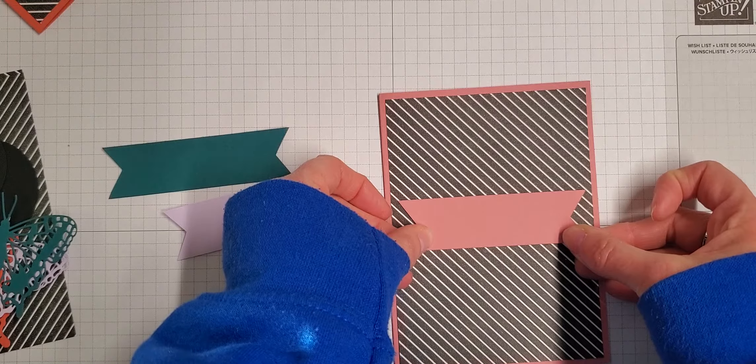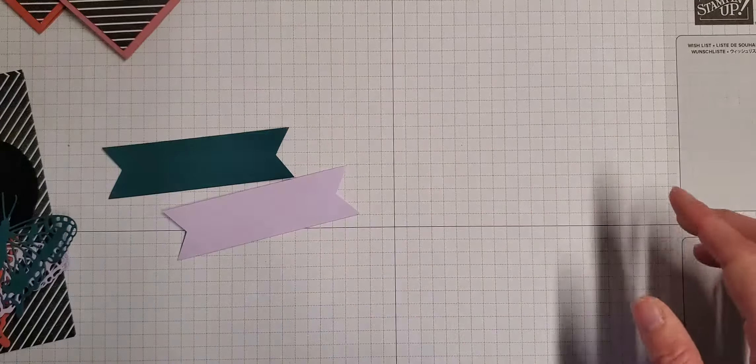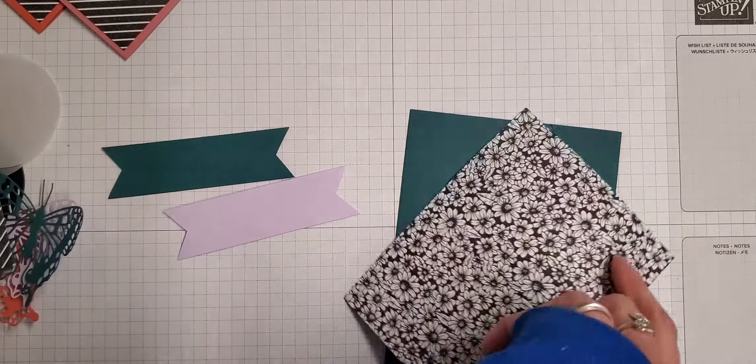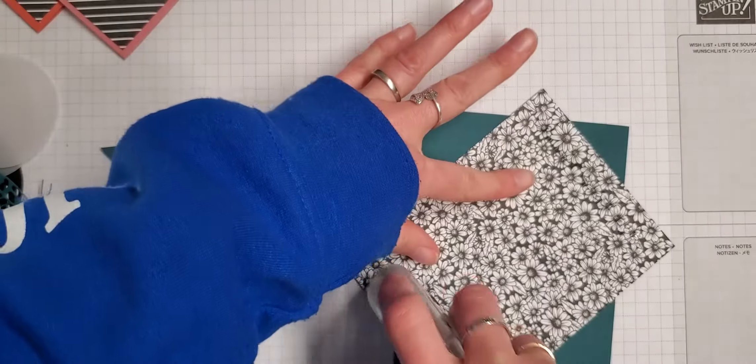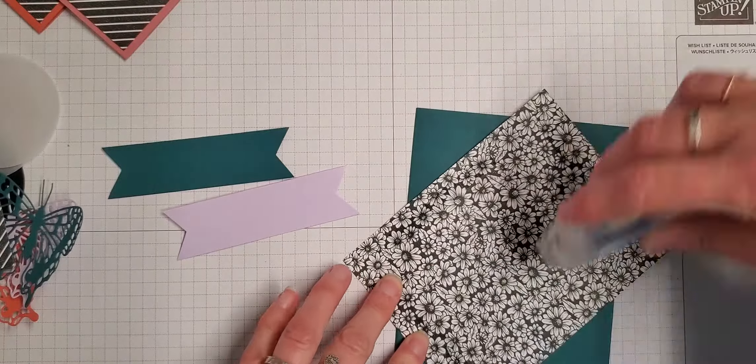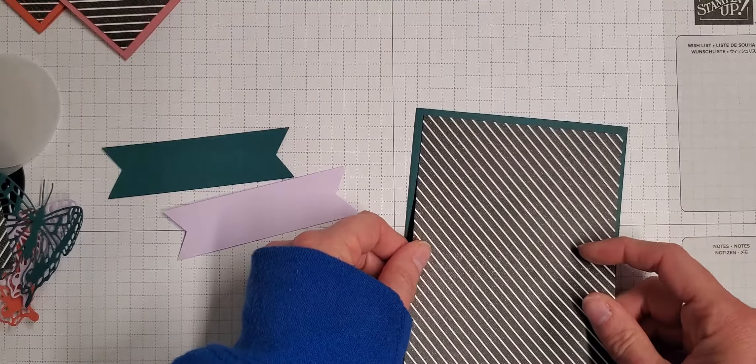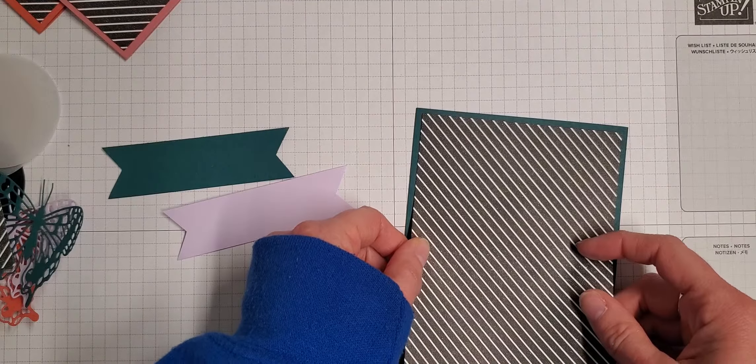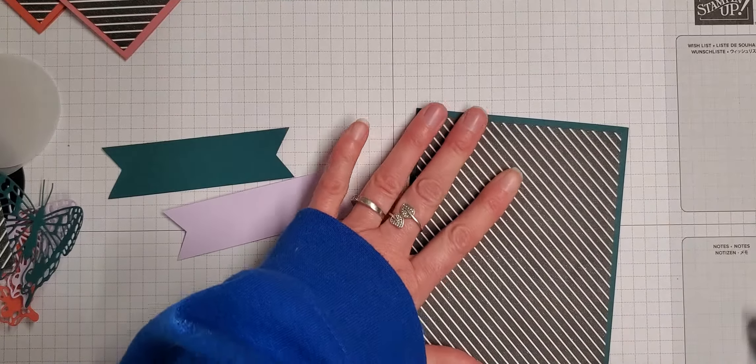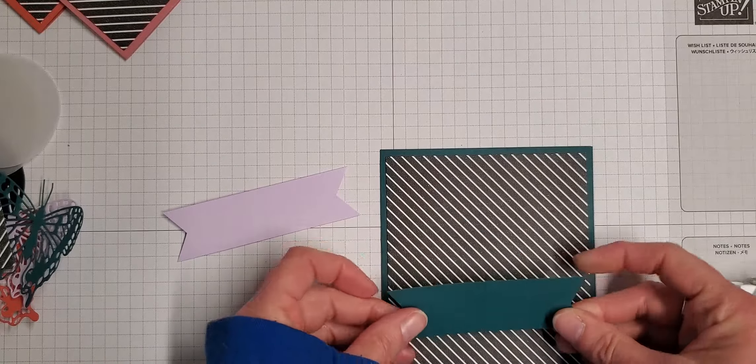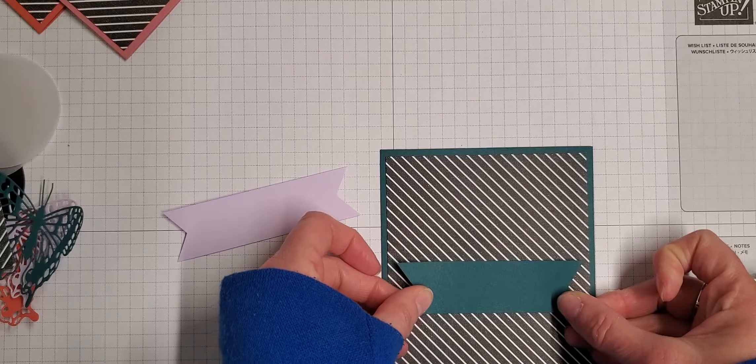You could of course switch up the backgrounds on the black and white paper and that would be really pretty too, but I'm just going to keep them all the same. I'd love to know in the comments below which one is your favorite. Again, I think the Seaside Spray and the Pretty Peacock are pretty close.